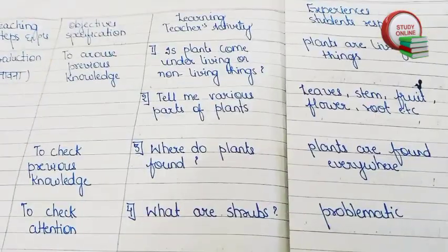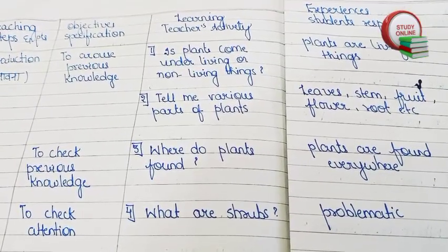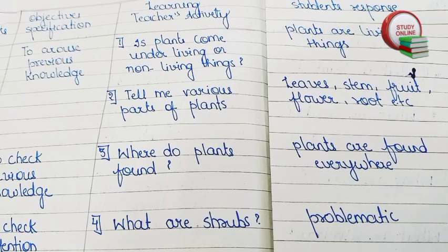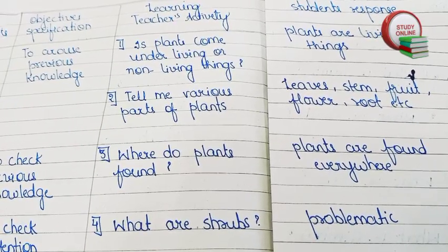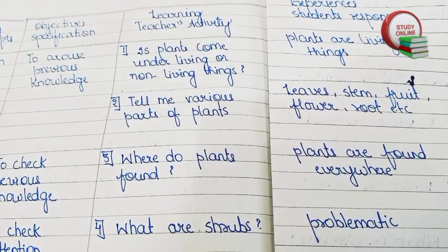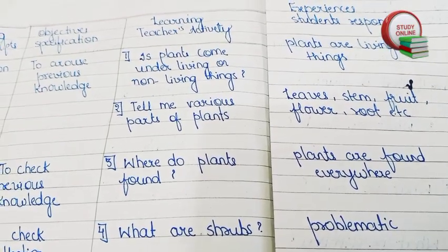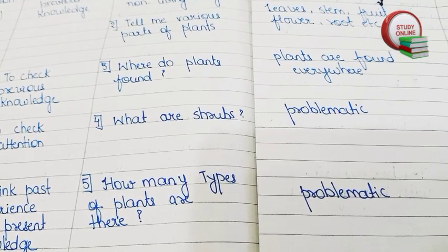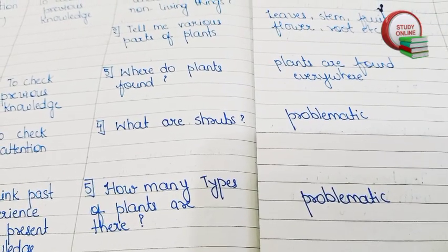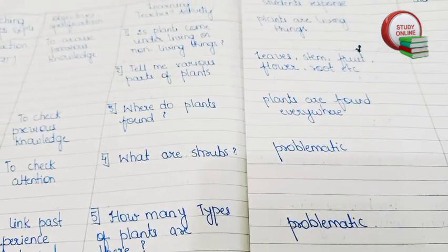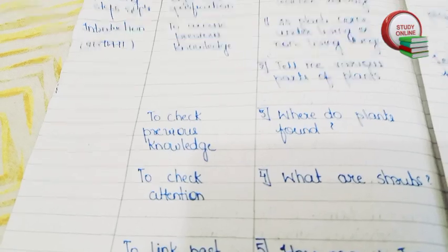Now let's turn the page. Here you can see the introduction part. For the introduction part we can add about five questions. The first question is: are plants living or non-living things? The student will answer it is a living thing. Tell me various parts of plants — the student will try to answer. Where are plants found? — plants are found everywhere. What are shrubs? — they will not be able to answer. How many types of plants are there? — that will also be problematic for students. So here we have to announce our topic.